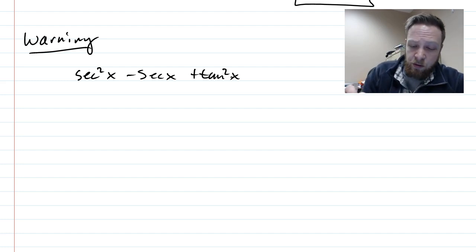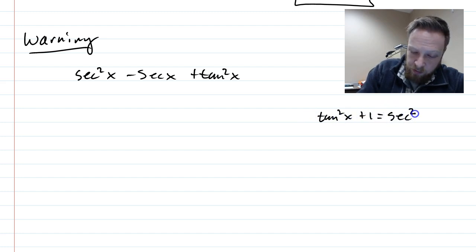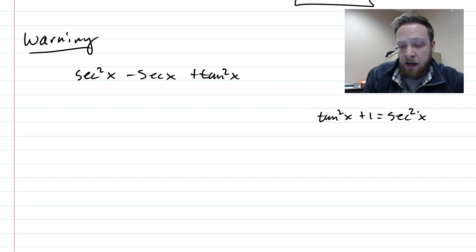And so what should be going on in your head is that I have secant squared and I have tan squared. I probably can rewrite this so that I only have one or the other. Now, we already said that tan squared of x plus 1 equals secant squared x. And so what I'm going to do is I'm going to rearrange it so that I only have secants.